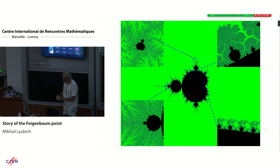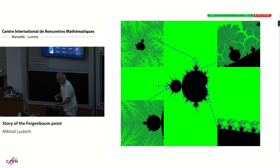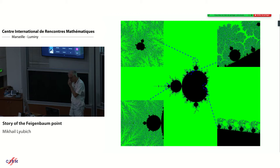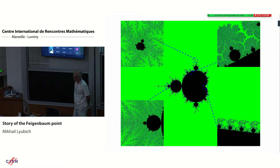On the real line, before this point the dynamics is quite simple - almost everything converges to some cycle of period two to the N. After that point, for many parameters you can observe chaotic regimes governed by absolutely continuous invariant measures with positive characteristic exponents. That was already recognized by mid 70s, that there was some remarkable interesting feature of this parameter.